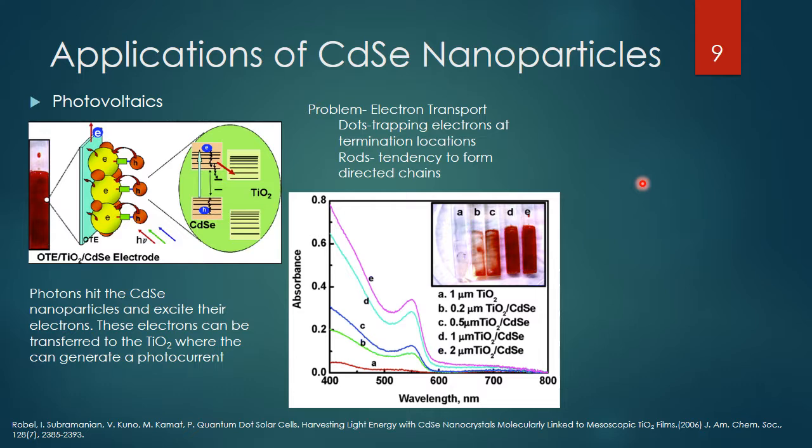As you can see on the graph, the more cadmium selenide concentration you add to the titanium oxide, the more absorbance you get of wavelengths in the visible spectrum. At the highest concentration you're getting the most absorbance, which will hopefully lead to the highest photocurrent and the most energy captured from the sun by the photovoltaic cell.